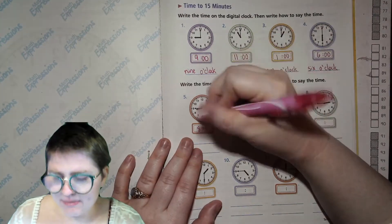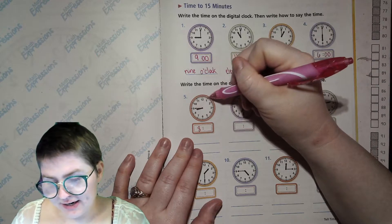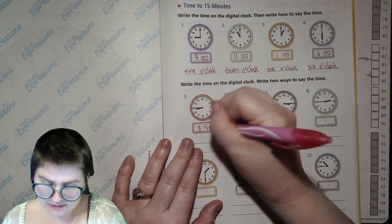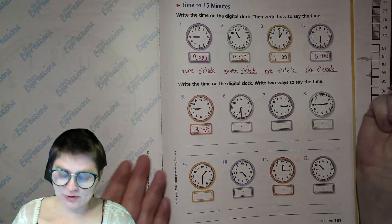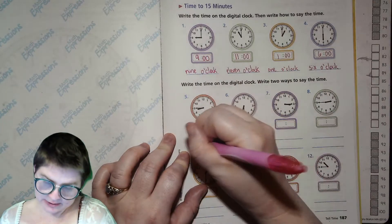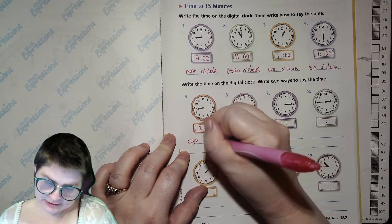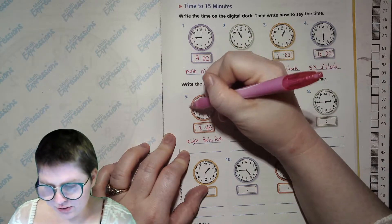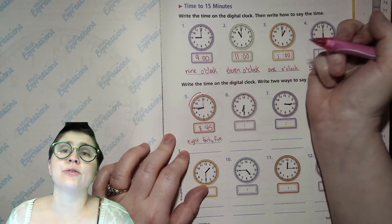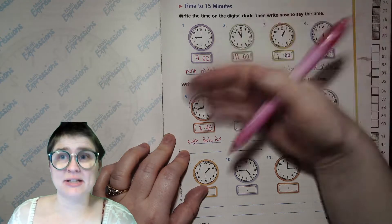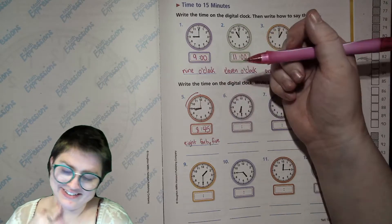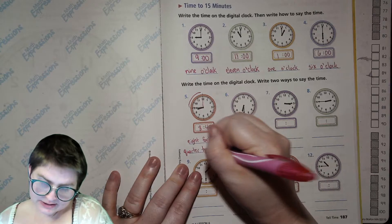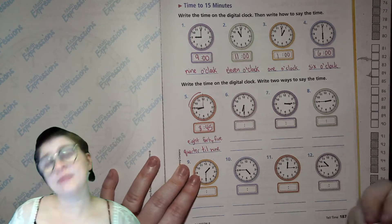And then for our minute hand, we're going to count by fives until we hit where it is starting here. So 5, 10, 15, 20, 25, 30, 35, 40, 45. So you could say 8, 45. You could say 8, 45. You could say 8, 45. You could also say quarter till because this amount of the clock is a quarter of the clock or quarter of an hour, right? 15 minutes left is a quarter of an hour. You could say quarter till 9.